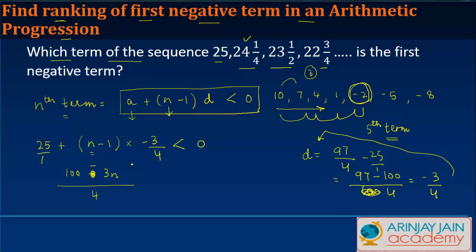So we have 103 - 3n < 0, which means 3n > 103, or n > 103/3, which gives n > 34⅓.